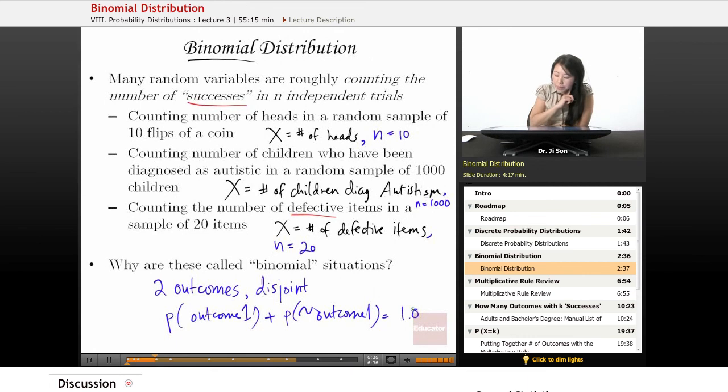Another way to put it is the probability of one outcome equals one minus the probability of not that outcome. That's the other way you could think about this.